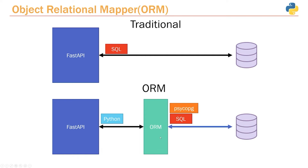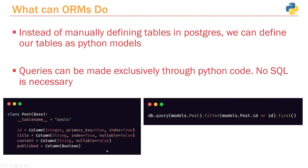The ORM will eventually send the result back to us, because databases can only talk SQL. However, by doing it this way, we can abstract away that SQL complexity and make use of very common Python objects and various other Python features to actually generate and build queries, as well as to create and define tables. So let's take a look at what an ORM ultimately allows us to do.